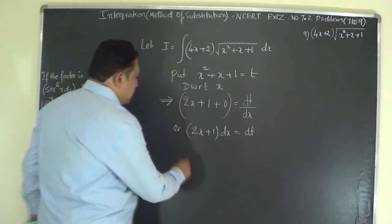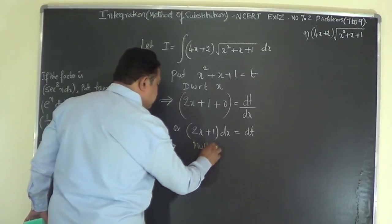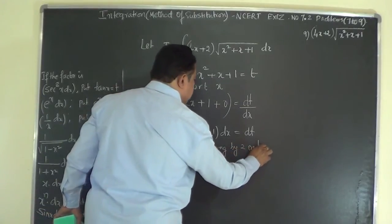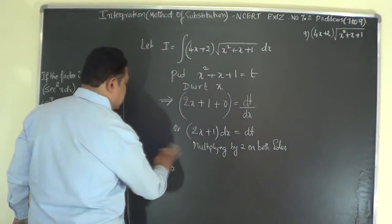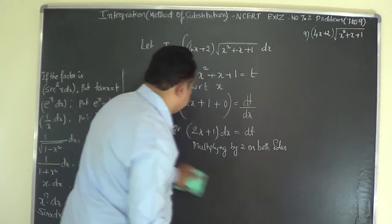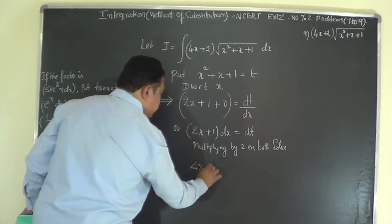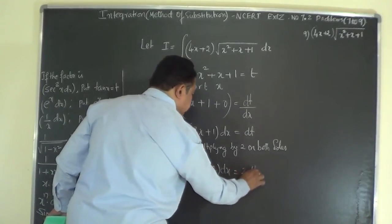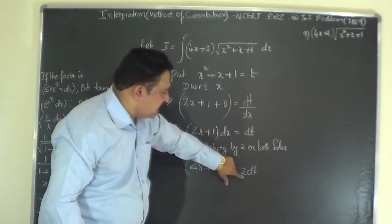To match (4x+2), we multiply both sides by 2: this gives (4x+2) dx equals 2 dt. So we now have the replacement factor: (4x+2) dx equals 2 dt.